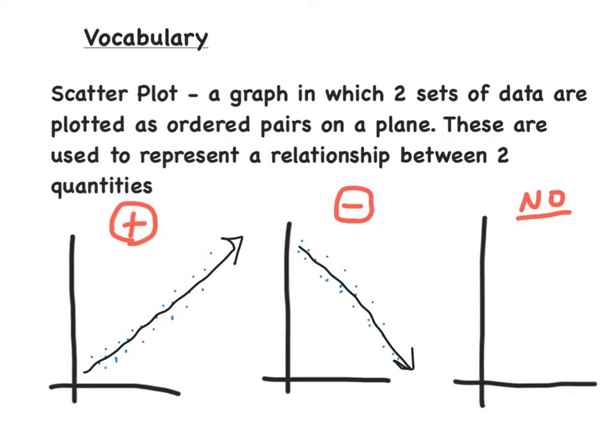If there is no correlation, you just have dots randomly all over the place. It doesn't look like it's going up, it doesn't look like it has a line going down. There is really no correlation. You are not able to draw a line whatsoever.